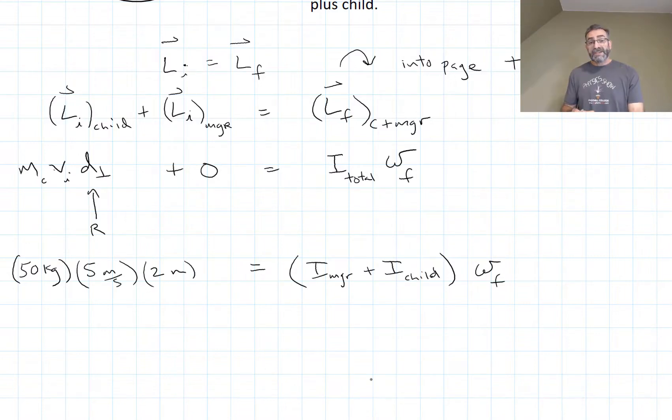For the rotational inertia, we have to combine the rotational inertia of the child plus the rotational inertia of the merry-go-round. The merry-go-round is just a solid disk, one-half mR squared. The child we'll treat as a point mass located at the radius of the disk. So their rotational inertia is just mR squared.